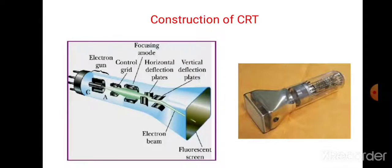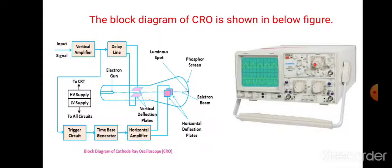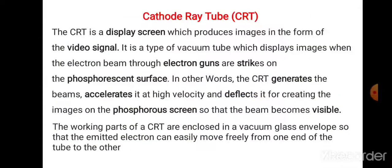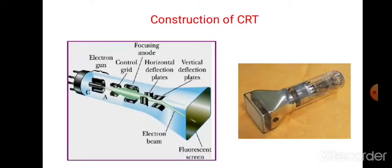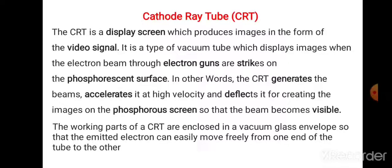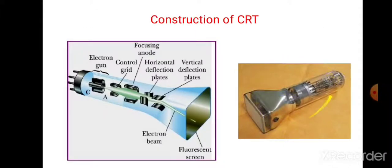Now we will come to the cathode ray tube. What do you mean by cathode ray tube? Look at this figure. The cathode ray tube consists of the electron gun, control grid, focusing anode, horizontal deflection plates, vertical deflection plates, electron beam, and the screen. This screen is made up of fluorescent material.